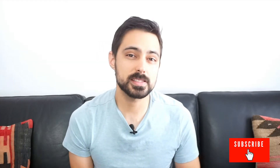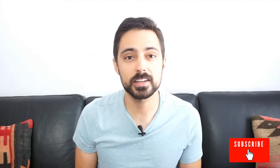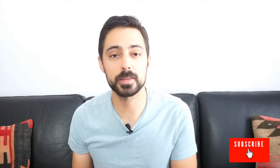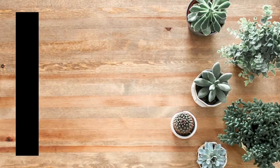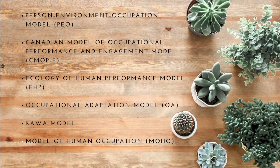This is the second video in a series of videos where we're going over the differences and similarities of major occupational therapy models. Here's a quick list of the models I'm covering in this series: the Person, Environment, and Occupation model; the Canadian Model of Occupational Performance and Engagement; the Ecology of Human Performance model, which is the one we'll go over today; the Occupational Adaptation model; the KAO model; and the Model of Human Occupation.